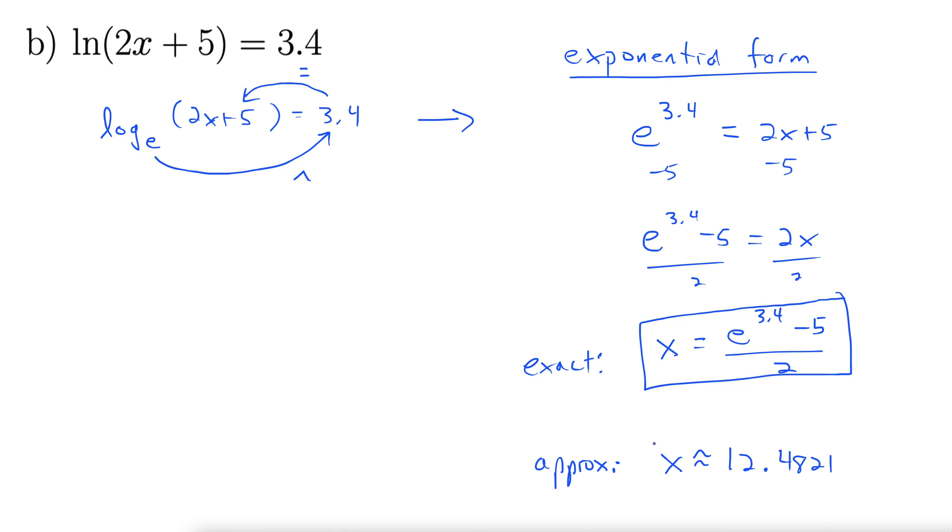See what you get. We get 12.4821. And that's an approximate. That's rounded off. Remember, anything 0.5 and above rounds up. 0.4 and below rounds down.